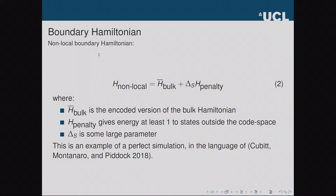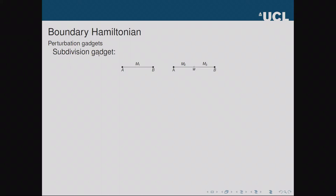Now we need to add Hamiltonians. There are two steps: first we construct a duality from a local bulk Hamiltonian to a non-local boundary Hamiltonian. This non-local boundary Hamiltonian has two terms: H̄_bulk, the encoded version of the bulk Hamiltonian — the logical operator corresponding to our bulk Hamiltonian in error correcting language — and H_penalty, a Hamiltonian that gives energy of at least one to all boundary states outside the code space. Both terms are highly non-local. The parameter ΔS is a large parameter we can choose, and this boundary Hamiltonian is an example of a perfect simulation in the language of Cubitt, Montanaro, and Piddock — it completely captures all the physics of the bulk Hamiltonian.